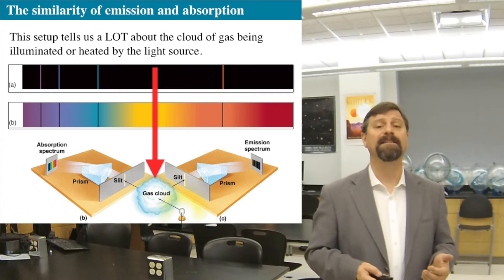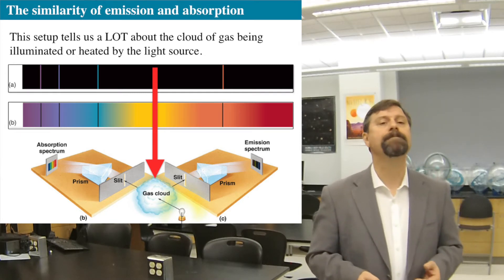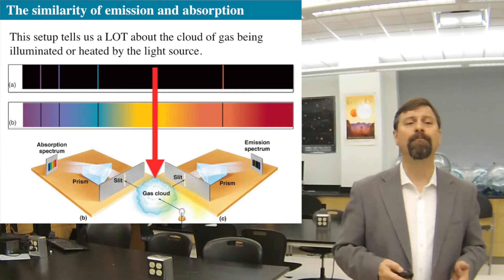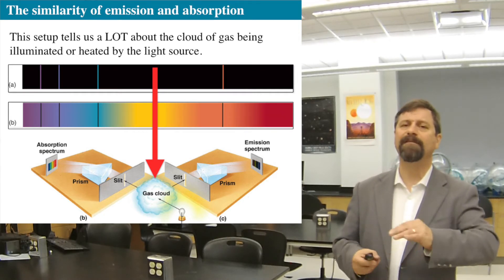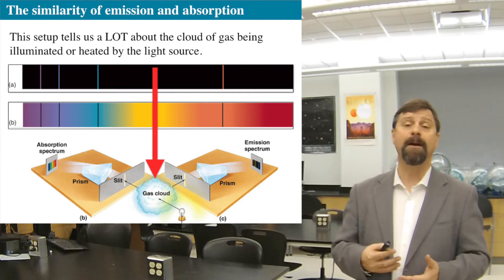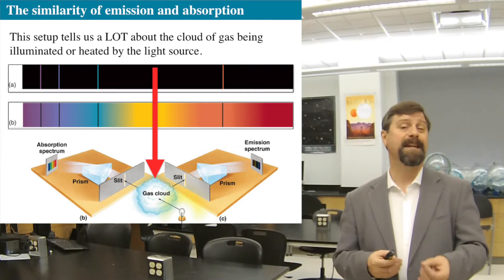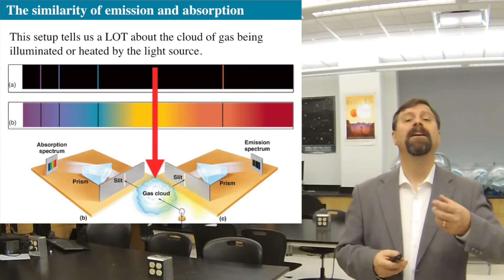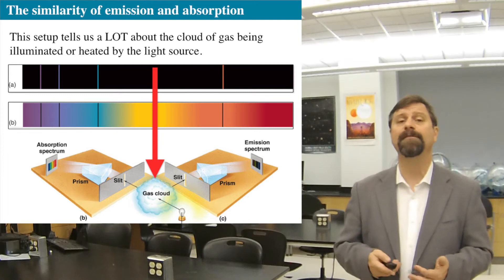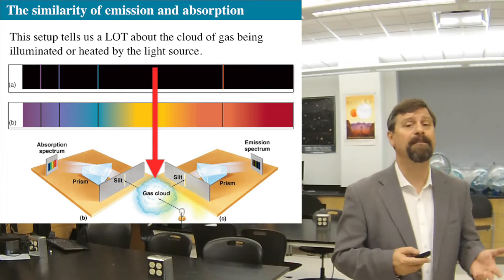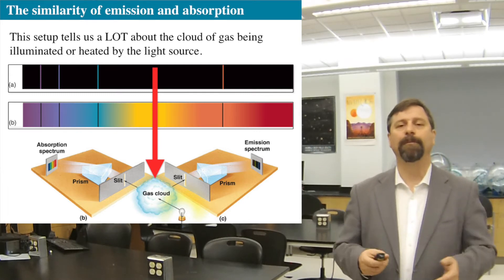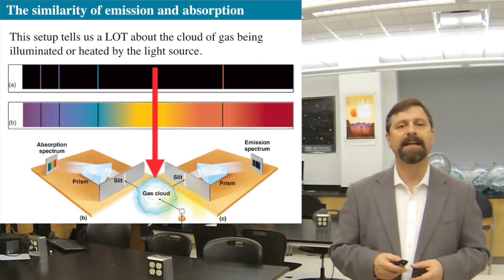Most importantly, the setup of the spectroscope tells us an enormous amount about the nature of the material. Depending on how you wish to view things or what is possible for you to view, you can set up an experimental apparatus in many many ways in order to do spectroscopy.